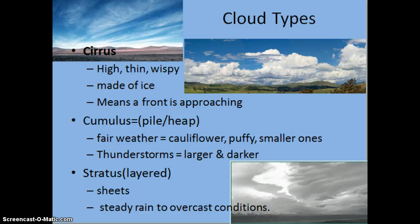Cumulus clouds are those puffy clouds that often look like various shapes. When we have low, white, fluffy cumulus clouds, we know it's going to be fair weather. When the cumulus clouds become larger and darker in color, turning gray, that is when we are going to experience thunderstorms. We know thunderstorms are coming because cumulus clouds have a lot of vertical development — they are not only large horizontally but also develop extremely high vertically.